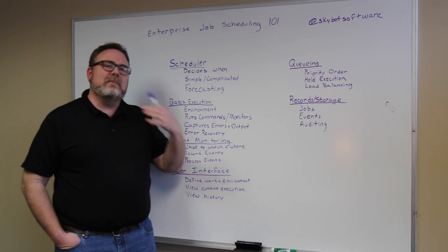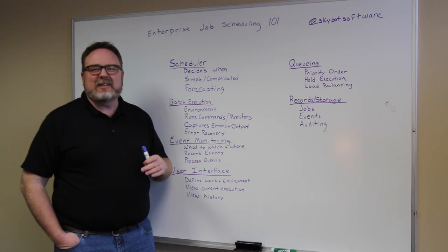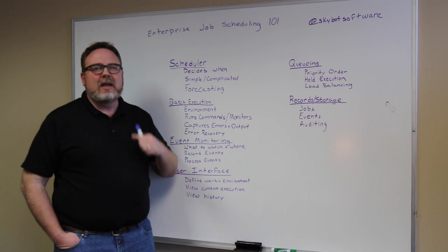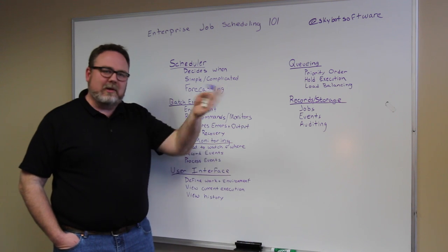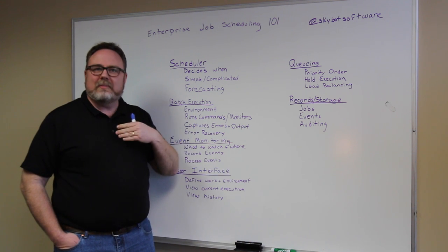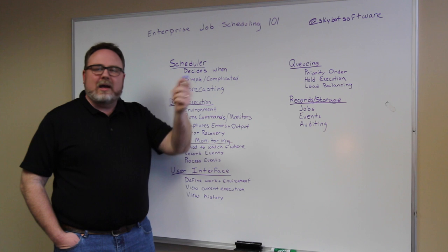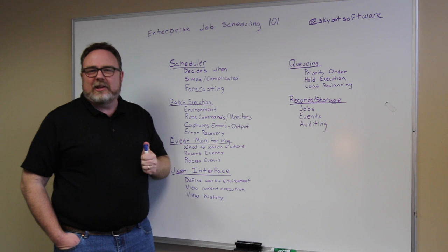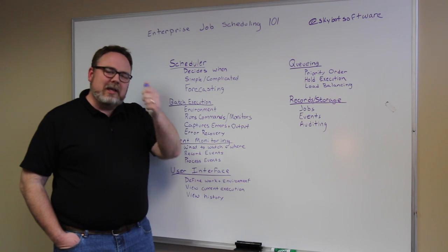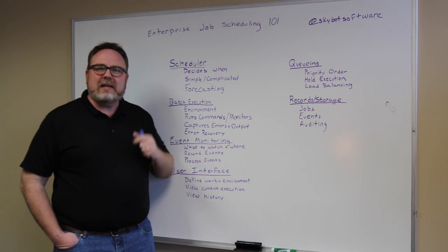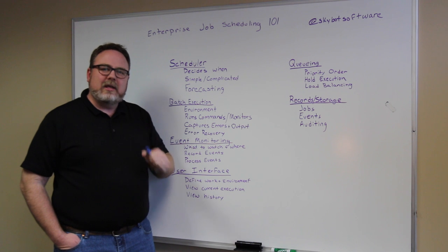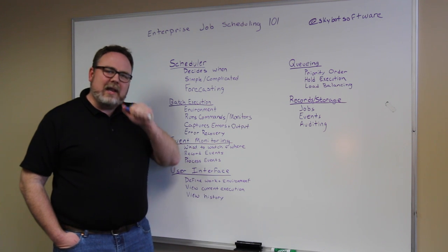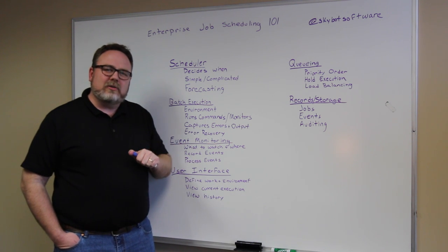We're going to cover some of the major subsystems of an enterprise job scheduler. Those subsystems being your job scheduler, the batch execution engine, your event monitoring thread, your user interface, the queuing mechanism, and your records and storage.